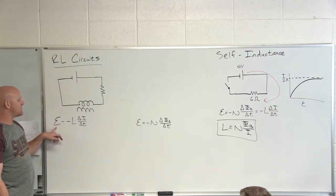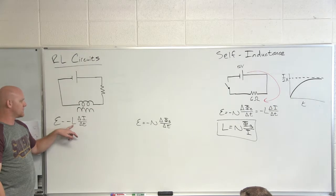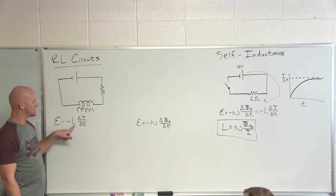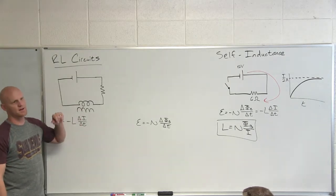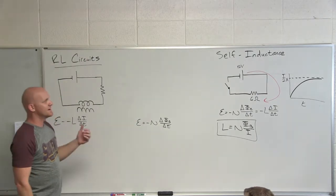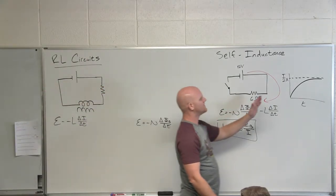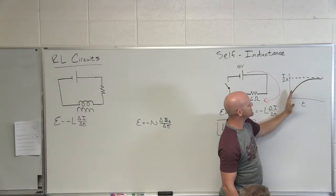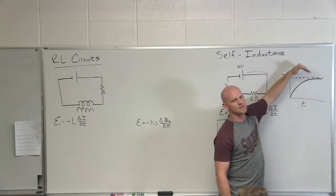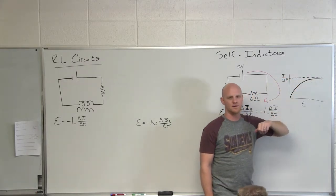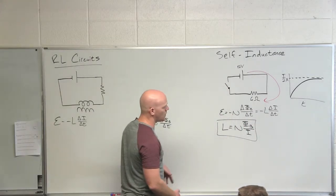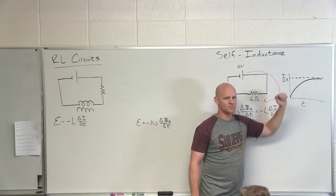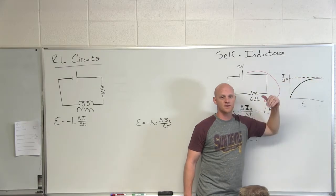In an inductor, what's actually being opposed is the change in current over time. Because it's opposing the change in current, that slope is decreasing the entire time until you finally reach a constant maximum current. At time zero, you have no current flowing, and it gradually grows to that maximum with the slope getting less and less steep.